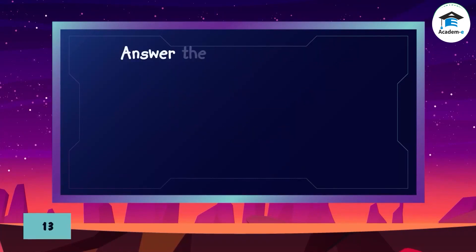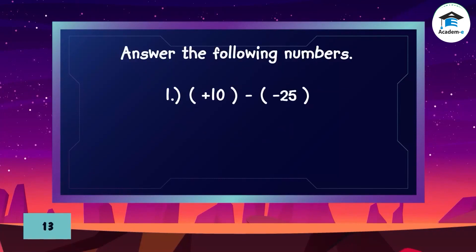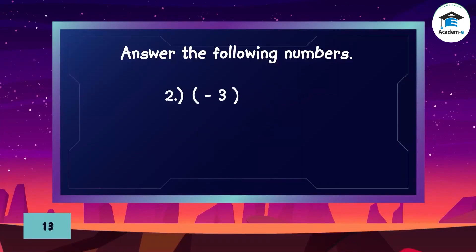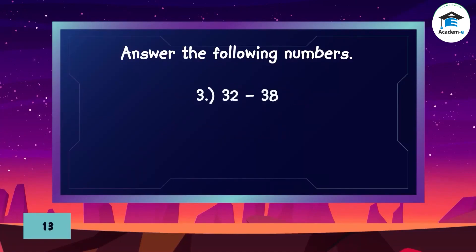Answer the following. (1) Positive 10 minus negative 25 — answer: 35. (2) Negative 3 plus negative 12 — answer: negative 15. (3) Negative 15 plus 32 minus 38 — answer: negative 6.